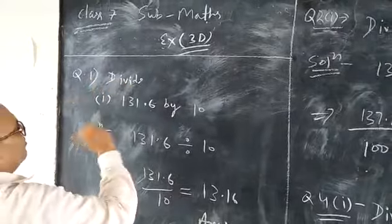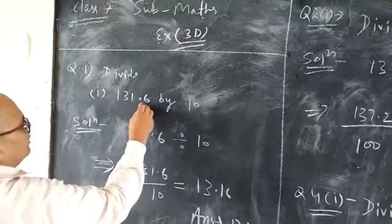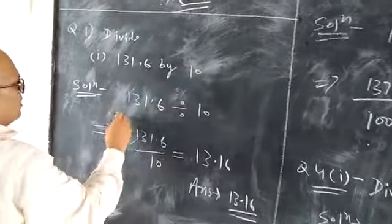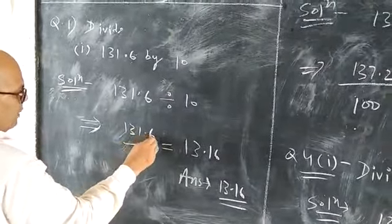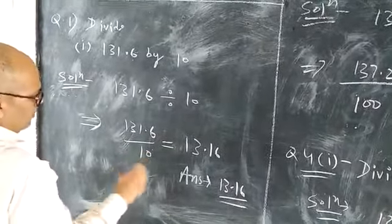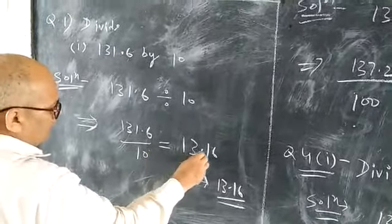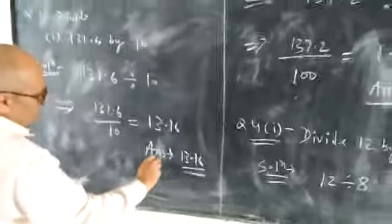Question number 1, divide 131.6 by 10. It will be equal to 131.6 upon 10, it will be equal to 13.16. That is the correct answer. Question number 2.